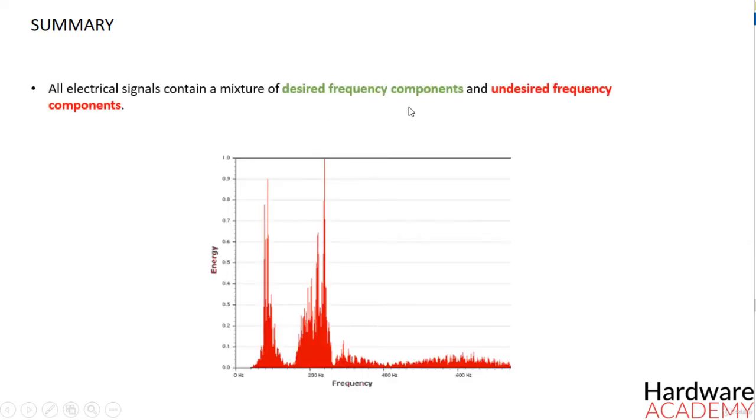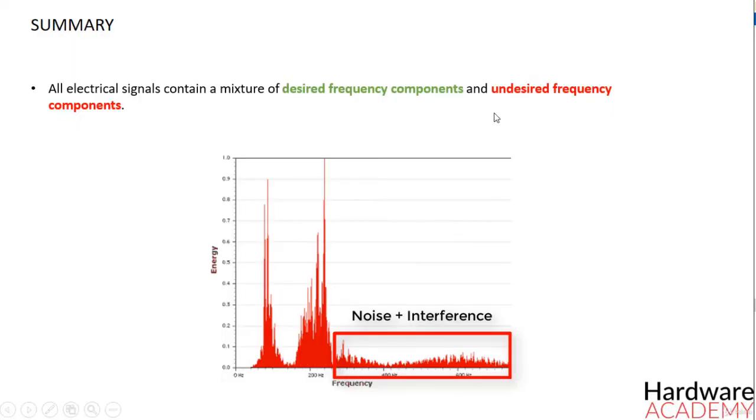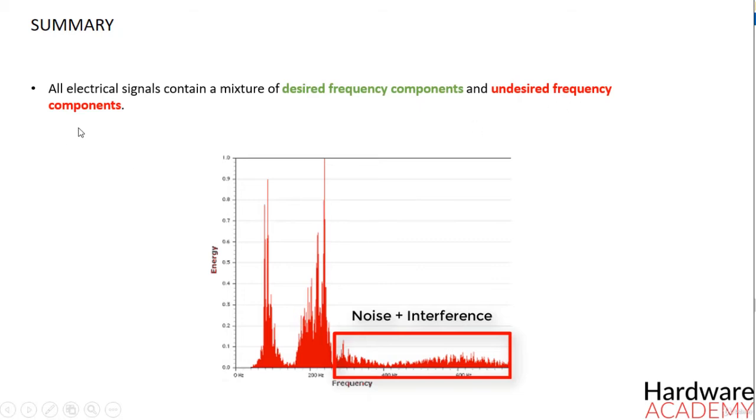Alright, now let's summarize what we have learnt until now. All electrical signals contain a mixture of desired frequency components and undesired frequency components. The undesired frequency components are typically caused by noise and interference, and in some situations they will negatively affect the performance of a system.